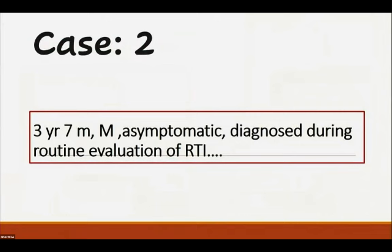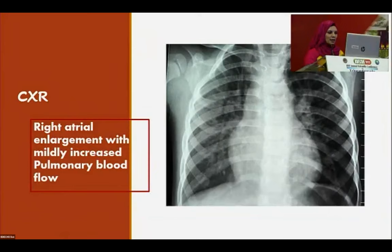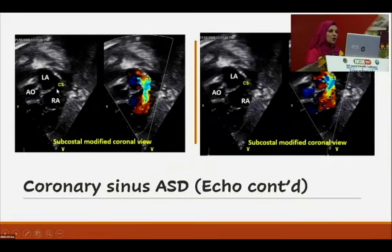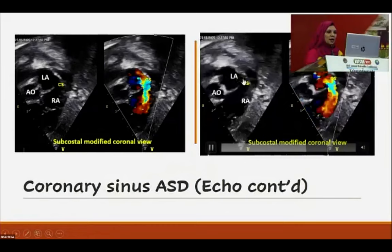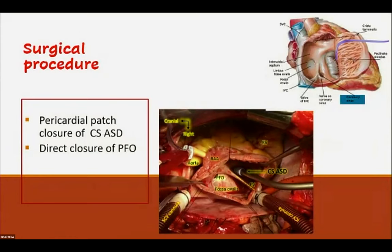Case 2: a 7-month asymptomatic child diagnosed incidentally during evaluation for respiratory tract infection, with right atrial enlargement and mildly increased pulmonary blood flow. Initially only a PFO with left-to-right shunt was suspected, but the right atrium was significantly enlarged. Investigation revealed the coronary sinus was dilated with an unroofed proximal portion and left-to-right shunting between the coronary sinus and left atrium. Surgery was performed: the ASD was closed with patch closure and the PFO was directly closed.